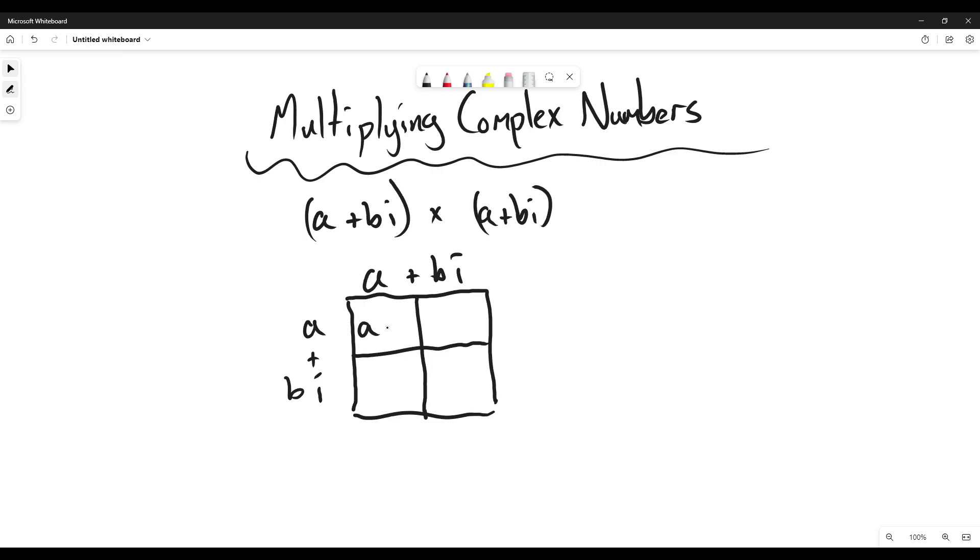So here we have a times a, and of course these would be different a's, it wouldn't be a squared. We have a times a, we have a times bi.